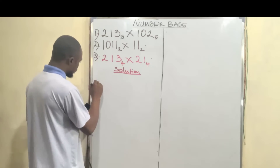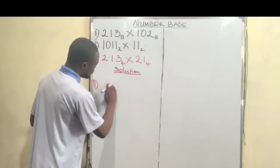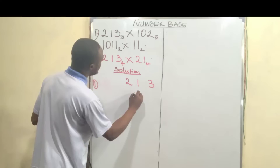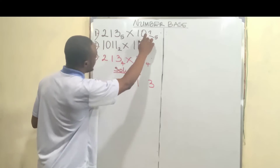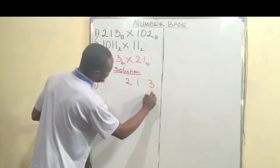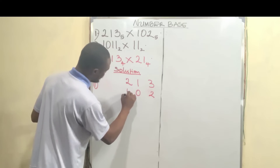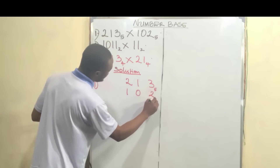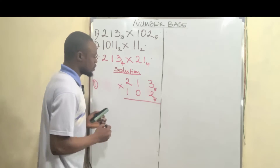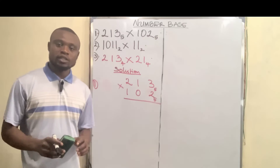So the first question: we have 213 here and 102 — they are all in base 5. Now rule a line with our partial multiplication here. One very important thing which we all need to note: